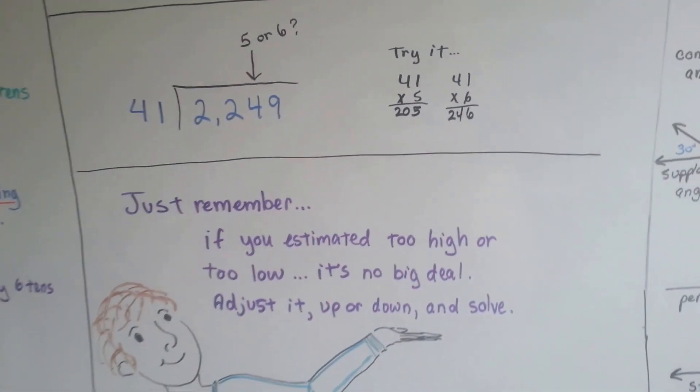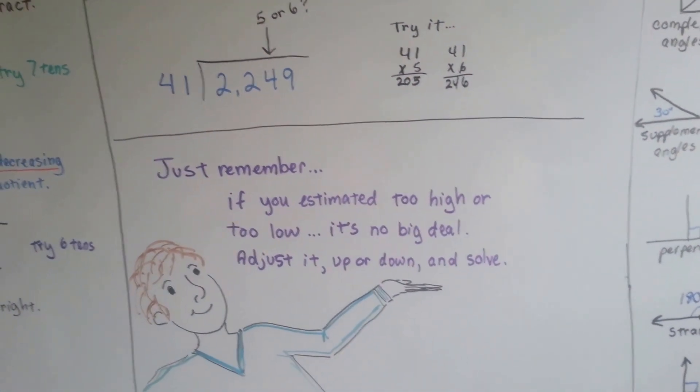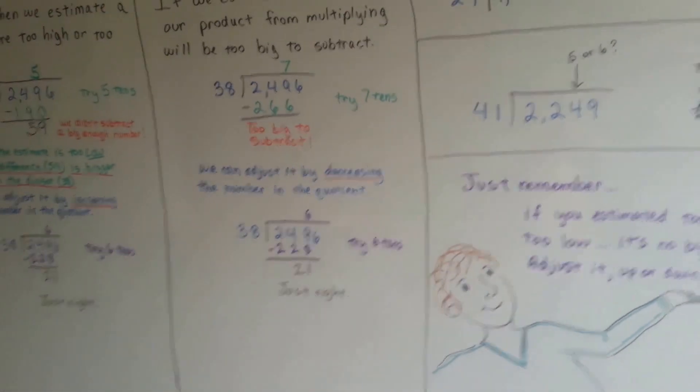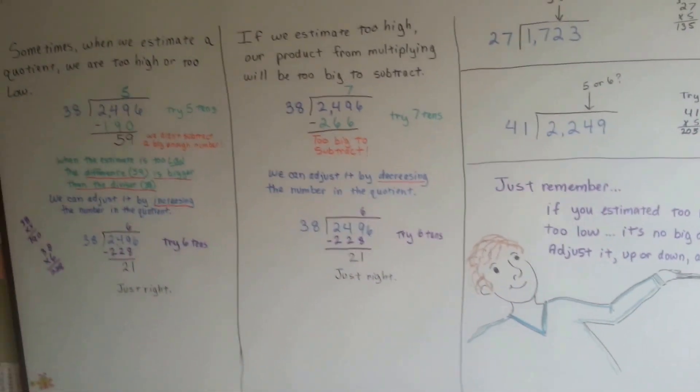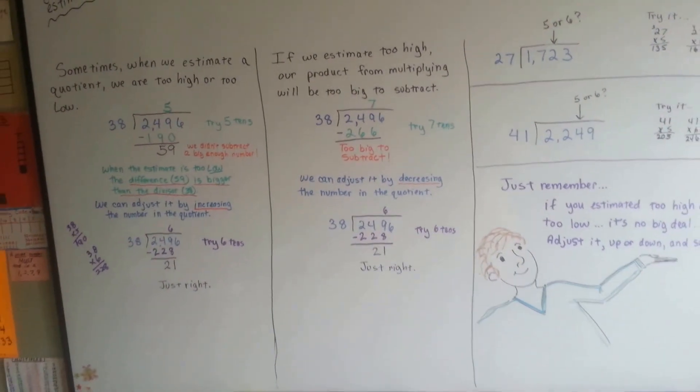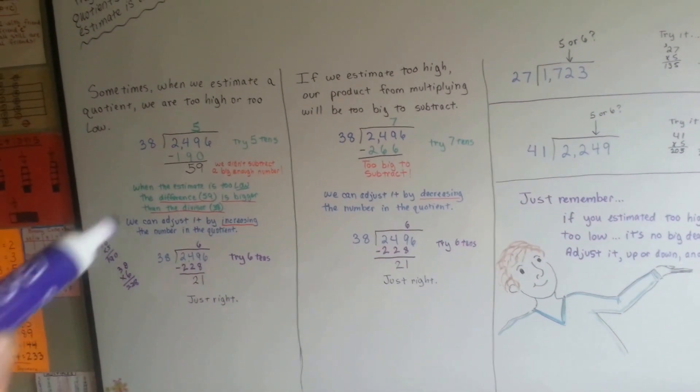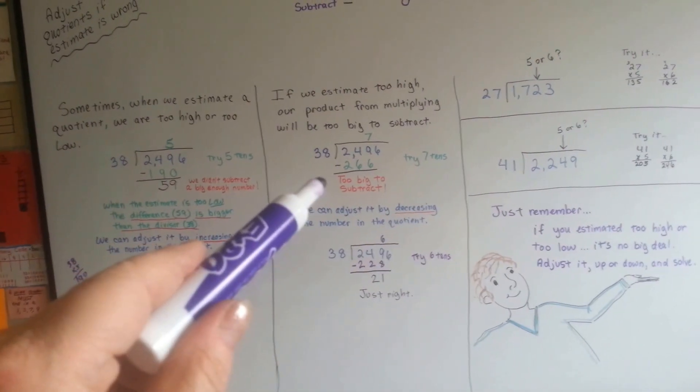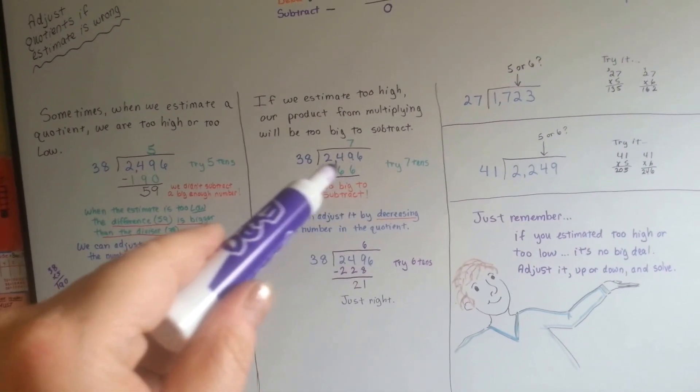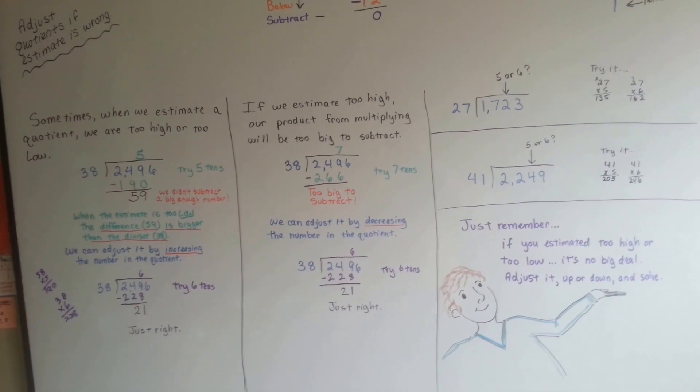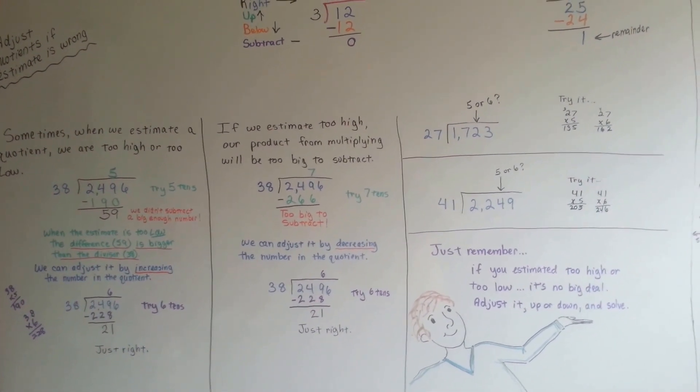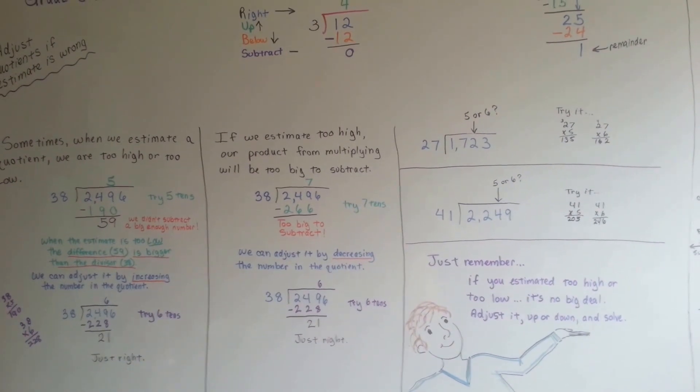So remember, if you estimated too high or too low, it's no big deal. You just adjust it up or down, and you solve it, okay? Just move it by 1. You'll know that it was too small because this subtracted number will be bigger than the divisor, and you know it'll be too big when you can't even subtract because it's too big to subtract after you multiply. Okay, we're going to keep talking division. I'll see you next video. Bye.